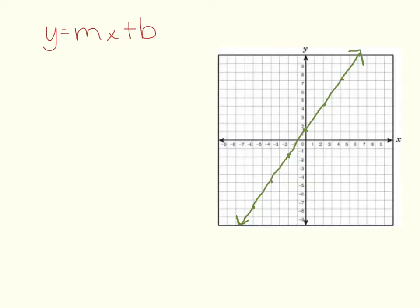First, let's look at writing an equation for a line that has a positive slope. Remember, when we write the equation, we want it to be in slope-intercept form, which is y equals mx plus b.